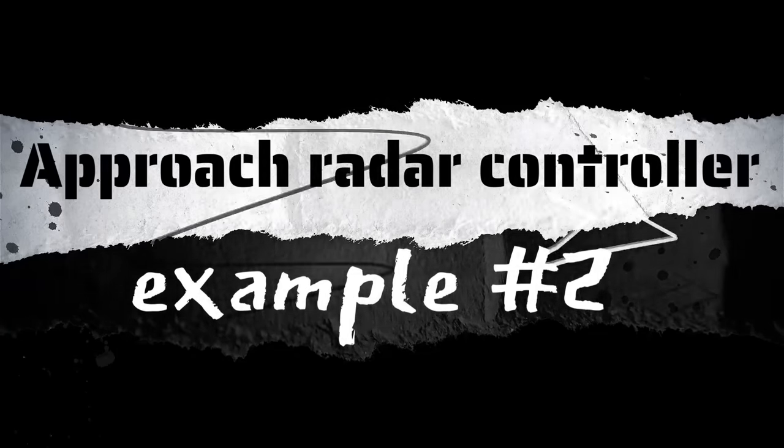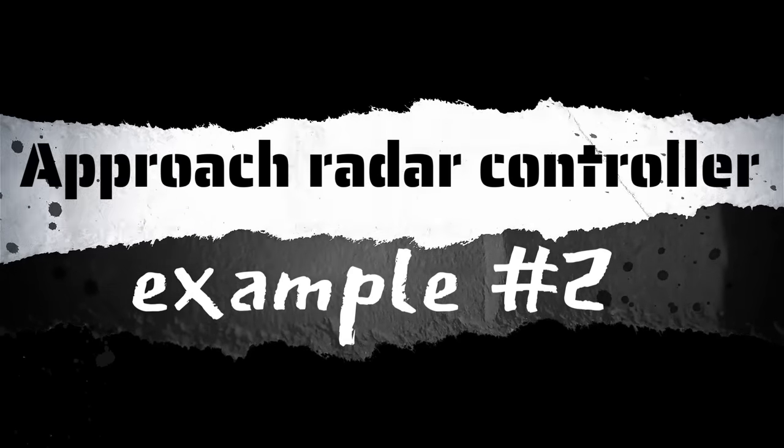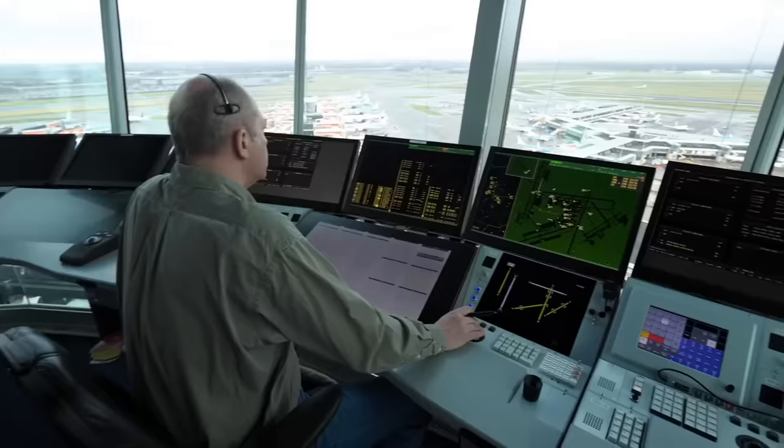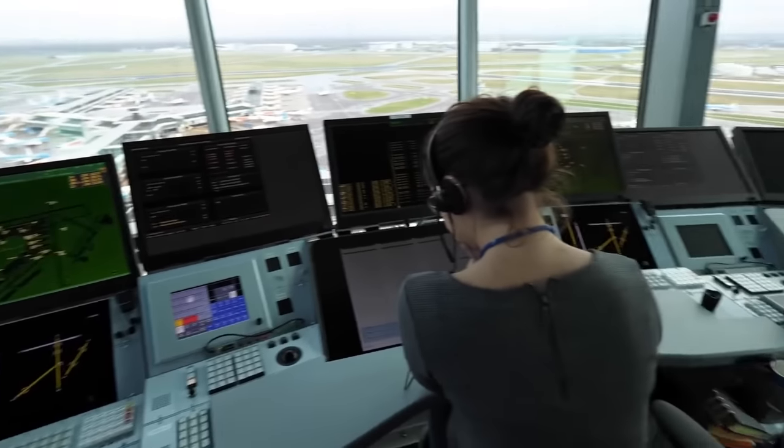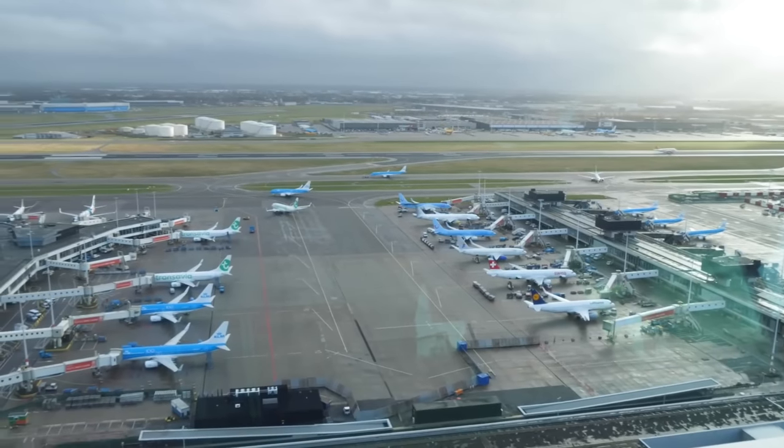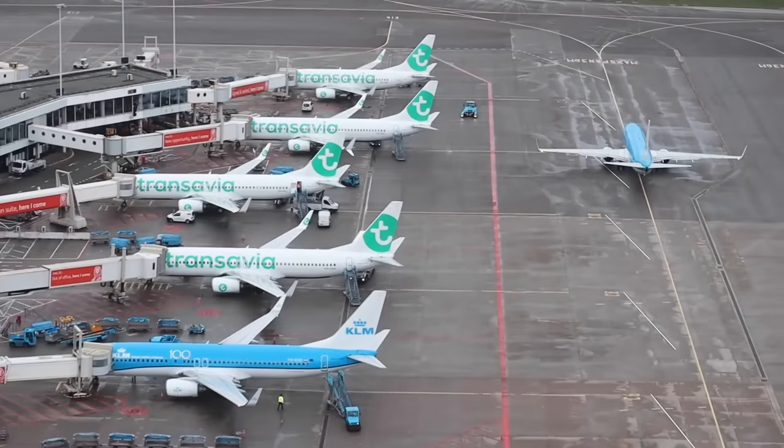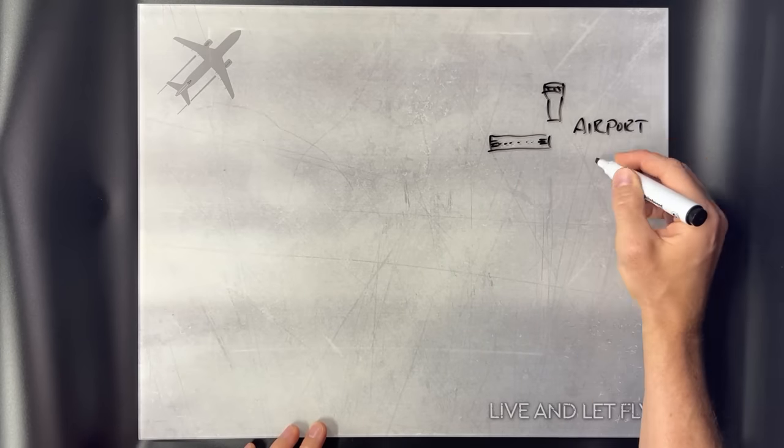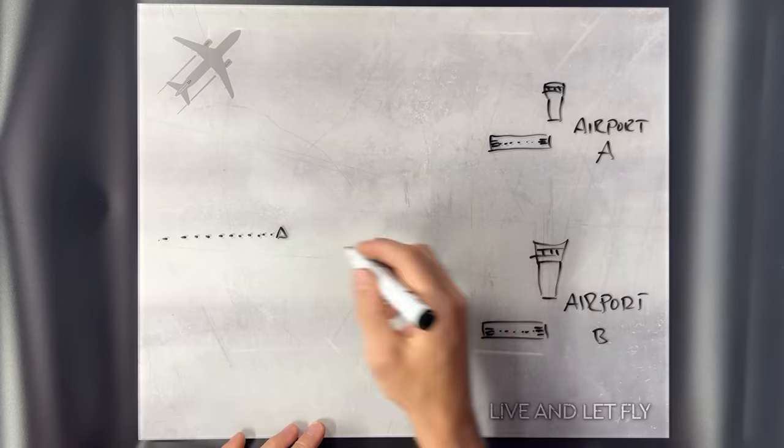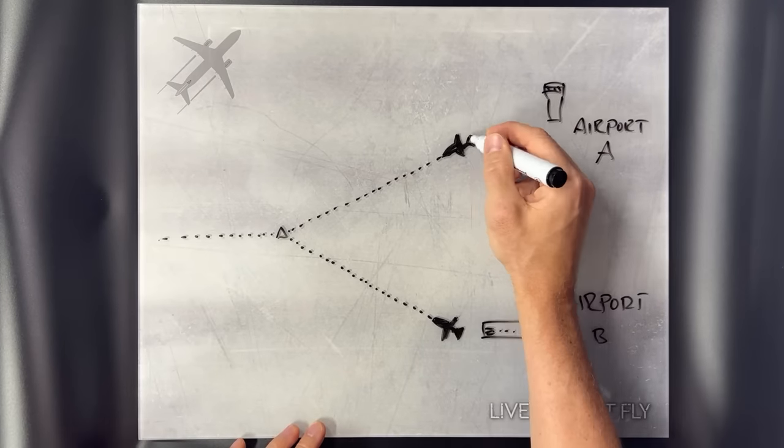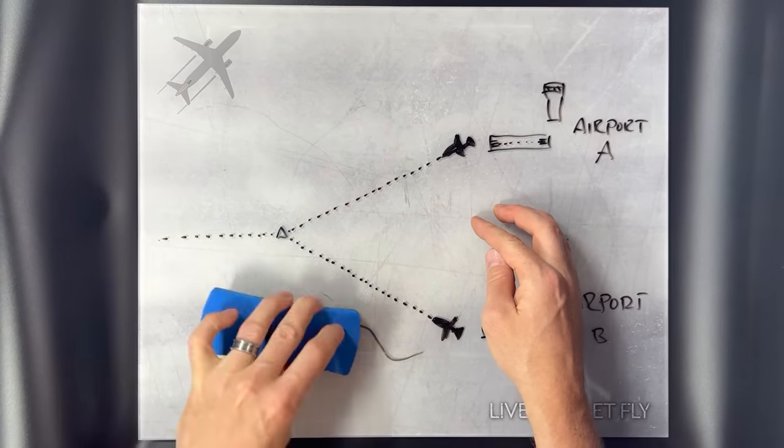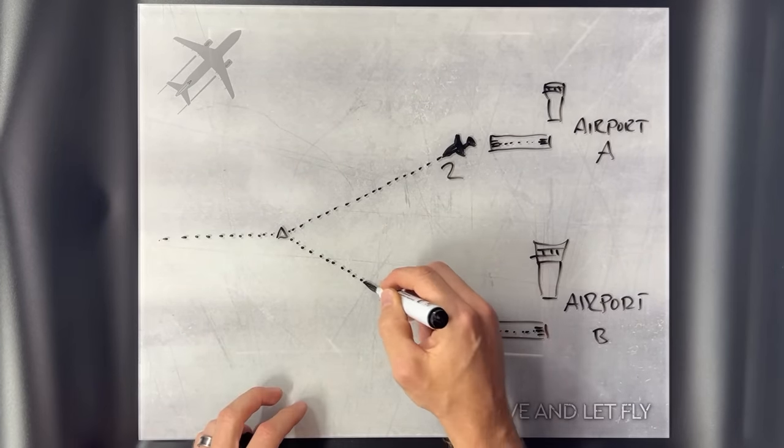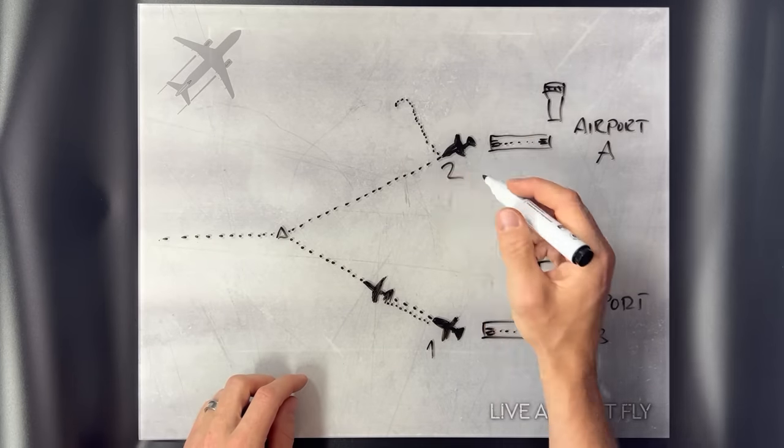Approach Radar Controller Example 2. In some cases, an airport departure radar controller is handling traffic not just from one, but two or even more airports. In this case, there may be situations where two aircraft can take off simultaneously from adjacent airports and head toward the same airway. This scenario is like the second example that we had earlier, but reversed.